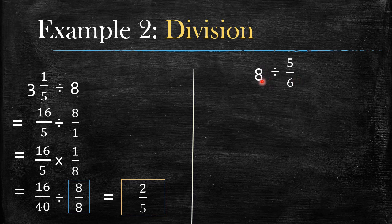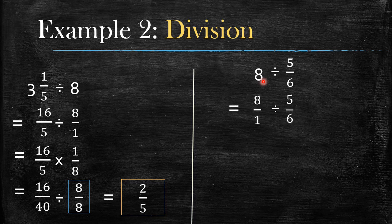Some people get confused when the whole number is on the left-hand side. It's actually simple as well. Take this whole number and make it a fraction first by putting it over 1 — that gives you 8 over 1, divided by 5 over 6.